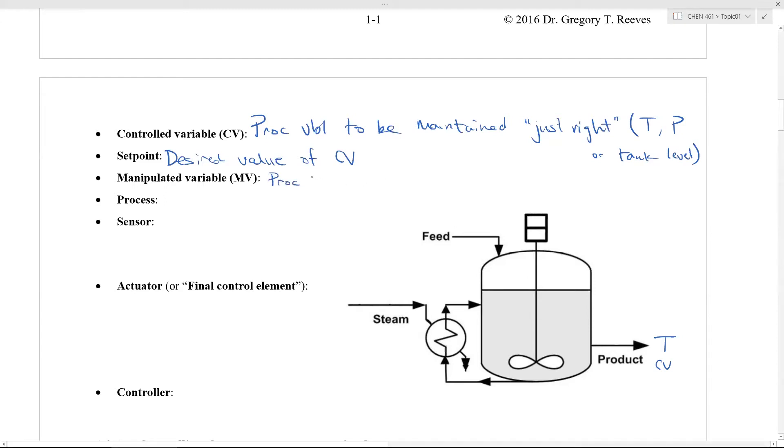You have your manipulated variable, which is the process variable that's changed to make sure your controlled variable is on set point. And almost 100% of the time, this manipulated variable is a flow rate of some kind. So in this particular example that I've sort of illustrated here, your manipulated variable might be your flow rate of steam. Now, this book uses F as a mass flow rate. So F is your manipulated variable of steam. F of your steam is your manipulated variable.